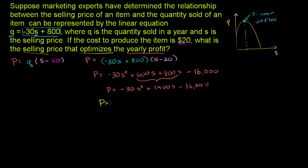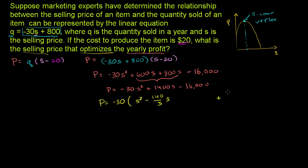So we can write profit equals negative 30 times (s² - (140/3)s + 1600/3). Here, 1400 divided by -30 is -140/3, and -16,000 divided by -30 is +1600/3. All we've done so far is factor out the -30.